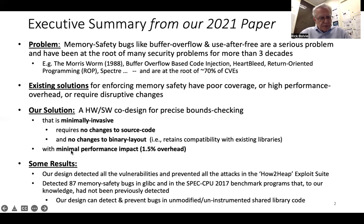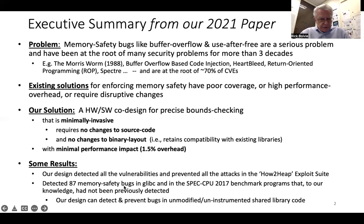And we do this with minimal performance impact. As we discussed last year, some of our results included the fact that we detected all the vulnerabilities and prevented all the attacks in the how-to-heap exploit suite. We also detected 87 memory safety bugs in GLibC and in the SPEC CPU 2017 benchmark programs that, to our knowledge, had not been previously detected. One nice thing about our design is we can detect and prevent bugs in unmodified, uninstrumented code in shared libraries.